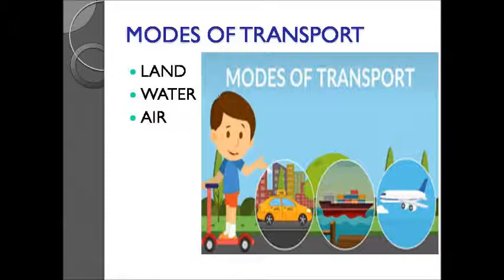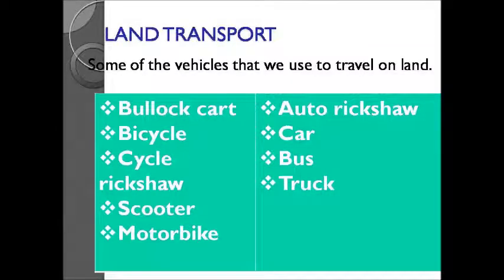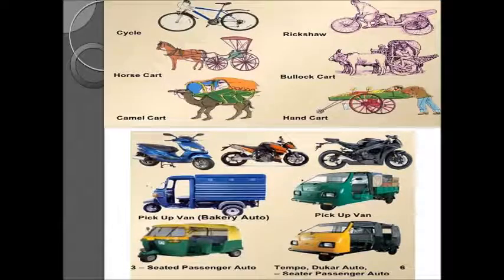Land transport means we use different types of vehicles to travel on land. Some of the vehicles that we use to travel on land are bullock cart, bicycle, cycle, rickshaw, scooter, motorbike, bus, car, truck, auto rickshaw, etc. In this picture, you can see different types of vehicles. Some vehicles move with the help of engines, and some vehicles do not have engines.